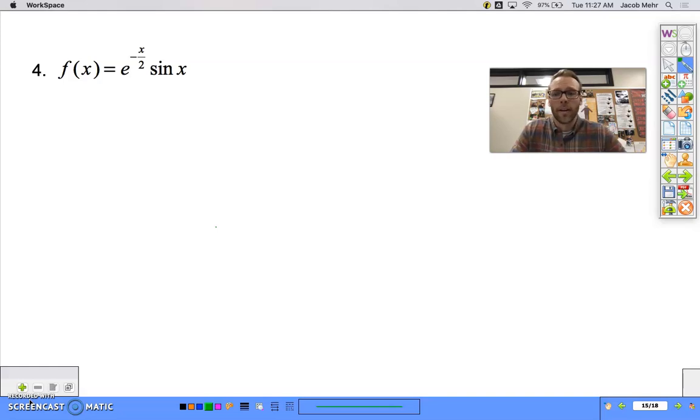All right, so here's that function I showed you right at the end of the last video: e to the negative x over 2 times the sine of x. We know that this is exponential decay, as I've mentioned.